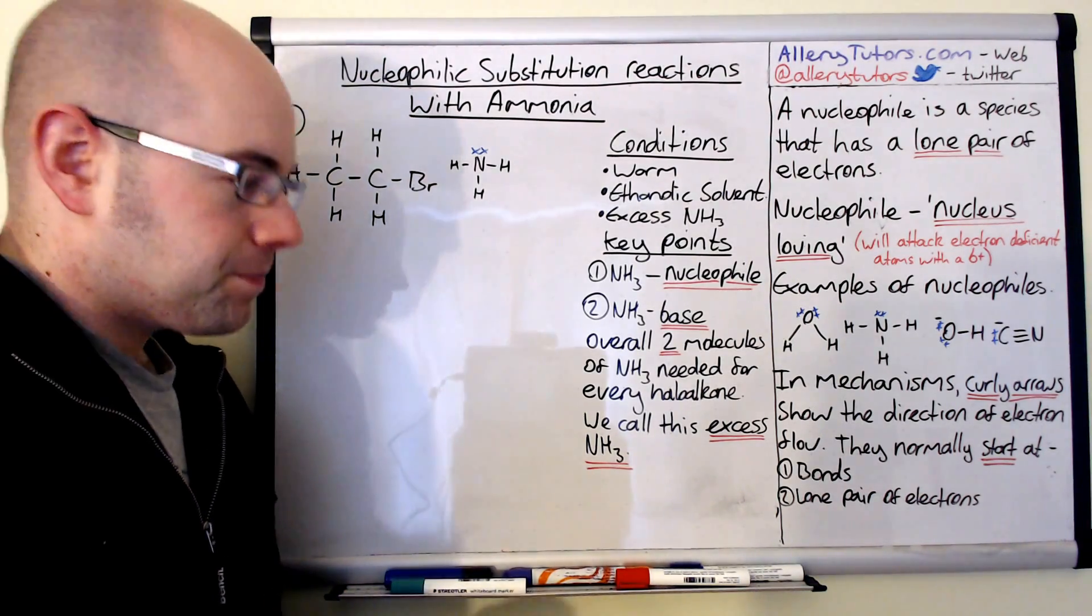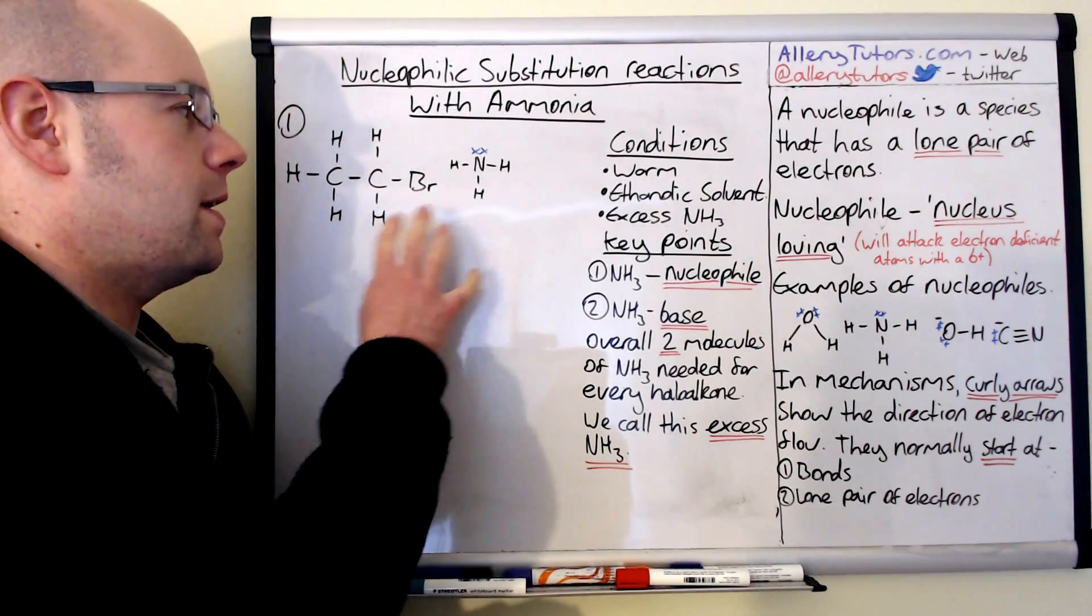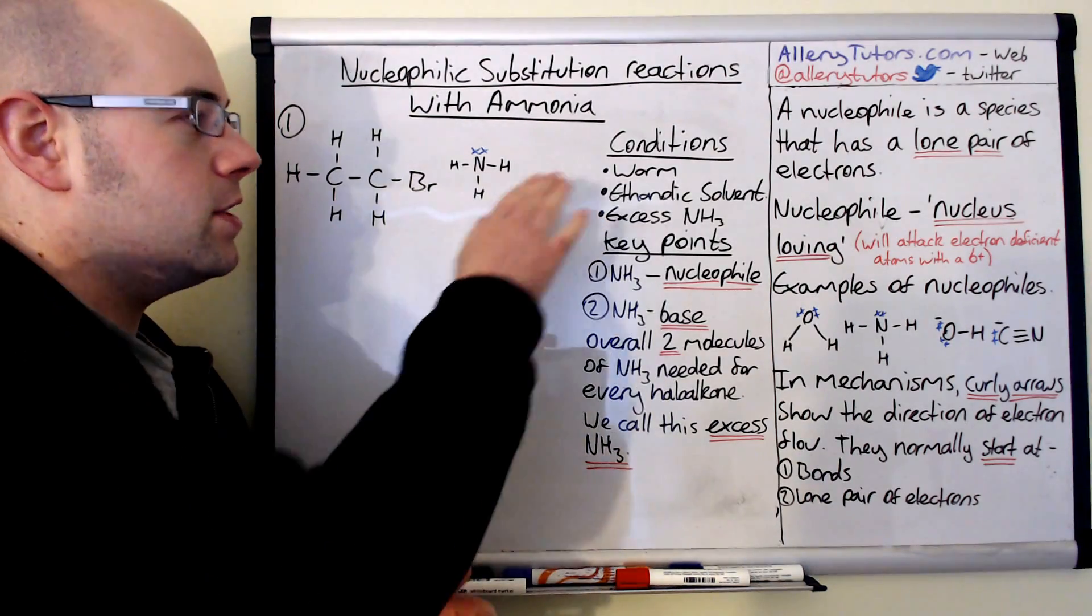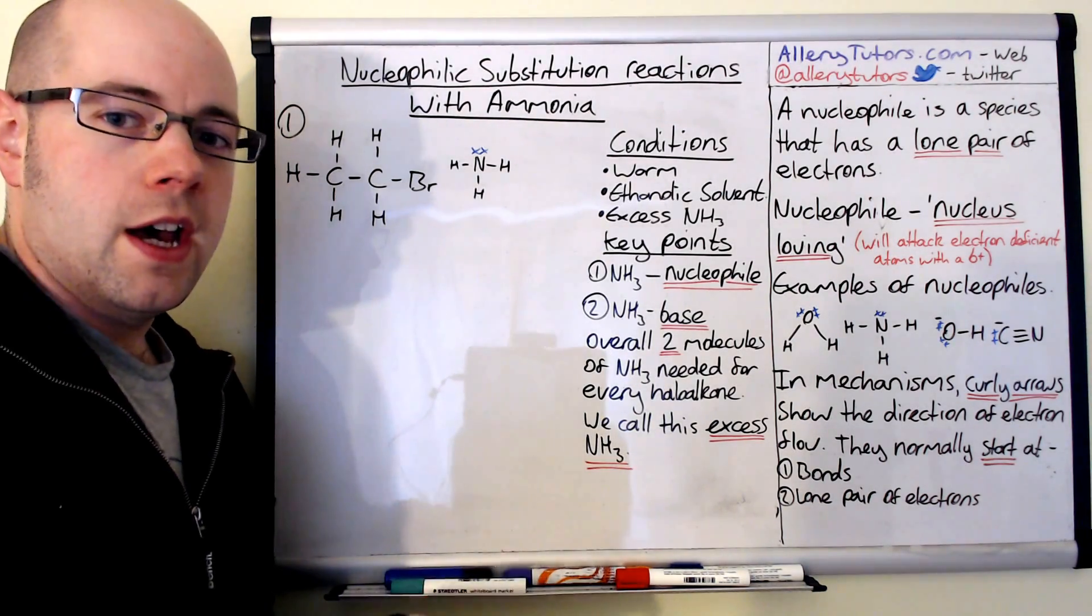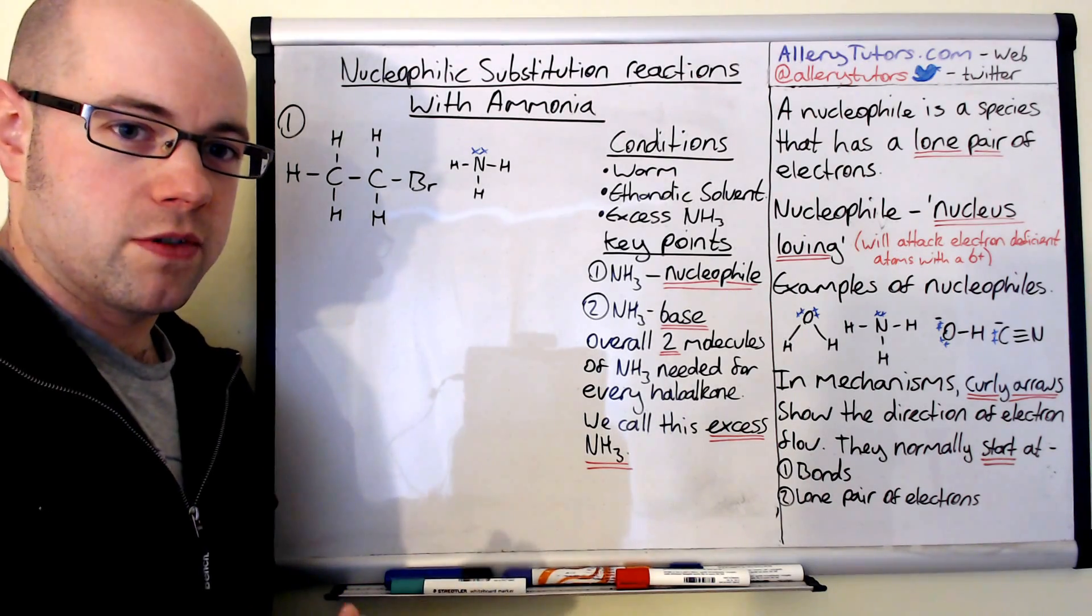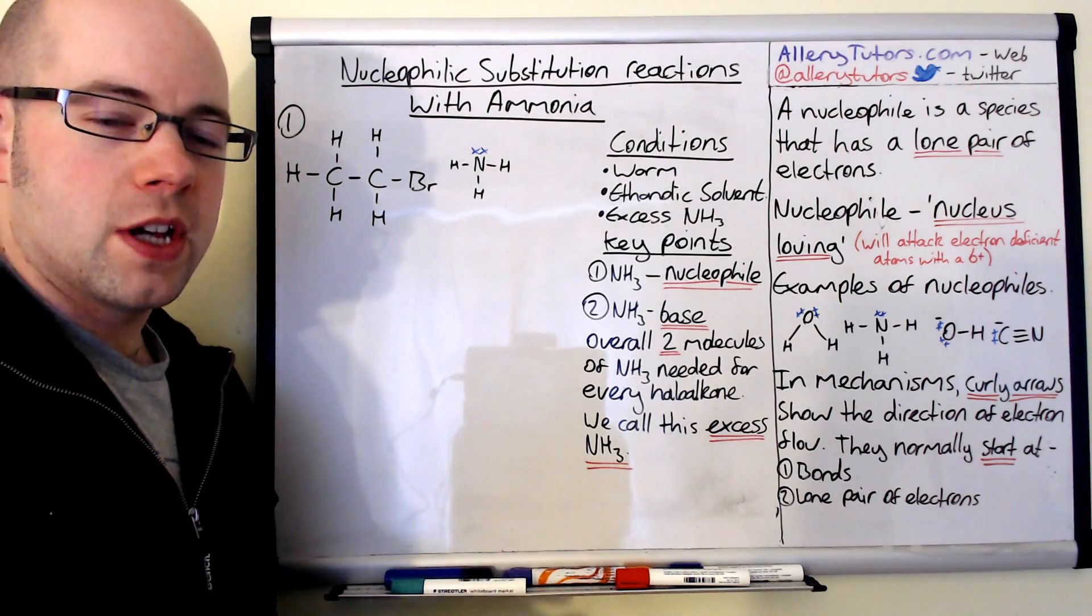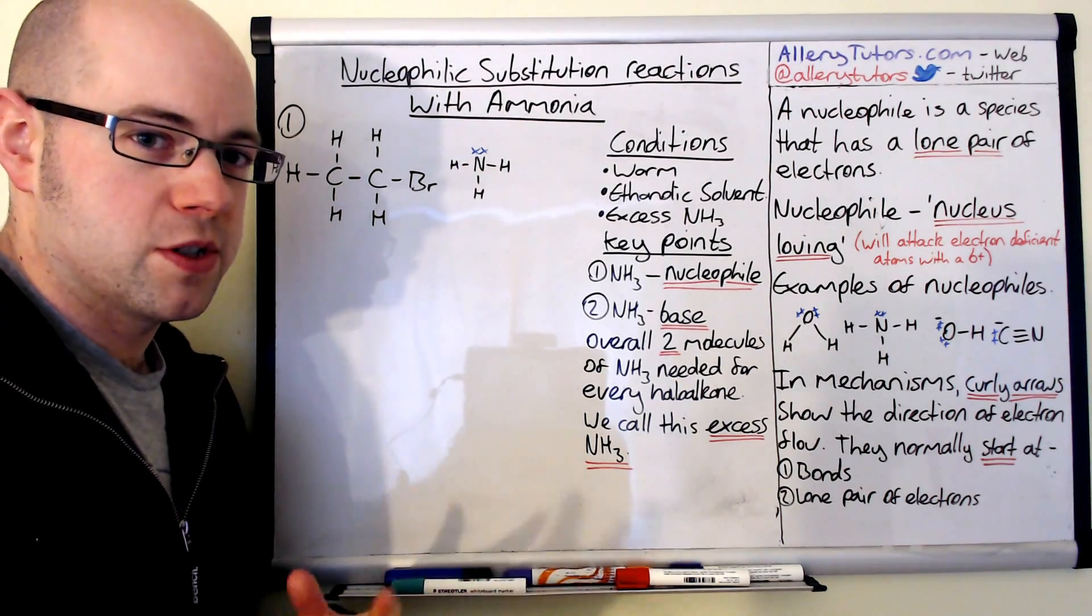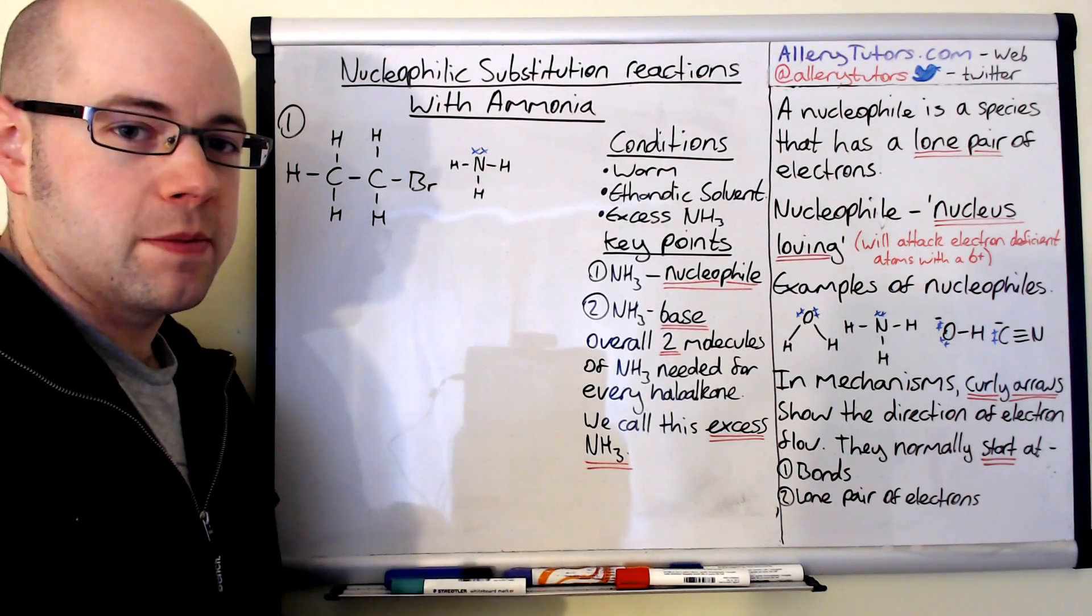So we're going to go through this example here. This is an example where we've got a haloalkane and ammonia. I just want to go through the conditions first. The conditions are this reaction has to be warm, just under 100 degrees Celsius, it has to be in what we call an ethanolic solvent. That just means that the ammonia is dissolved in an ethanol solution as opposed to aqueous which is water, and also excess ammonia which I'll come to in a minute.